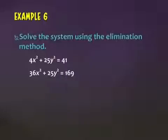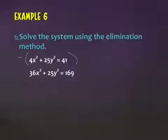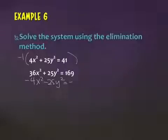No — I'd get 40x squared plus 50y squared equals 210. But what can I change so that I cancel them out? Make the top one negative all the way. So you can multiply the top one by negative one: negative 4x squared minus 25y squared equals negative 41.